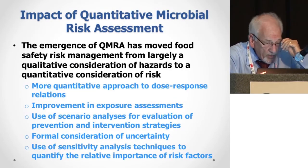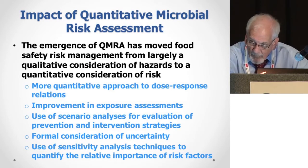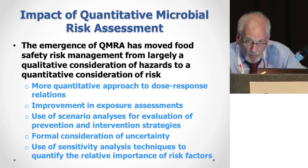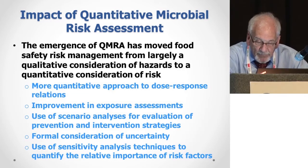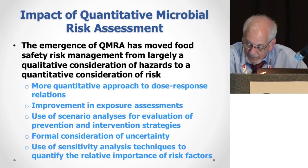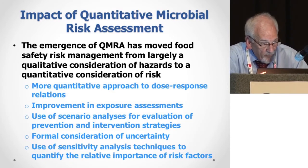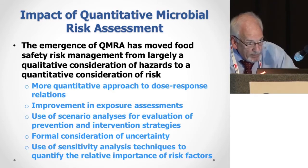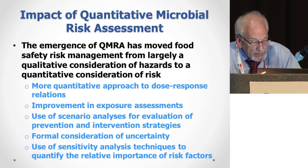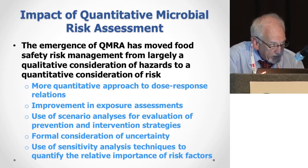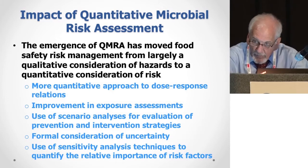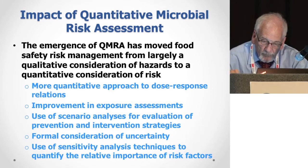The emergence of QMRA has moved the management of food safety in a direction from largely a qualitative approach to a much more quantitative approach. We've seen a much more quantitative approach to dose-response relationships, drastic improvements in how we conduct exposure assessments, and we routinely use fairly sophisticated scenario analyses to look at the relative effectiveness of different prevention and intervention strategies. We increasingly go through formal uncertainty determination and use sensitivity analyses with increasing sophistication to look at the relative importance of different risk factors.